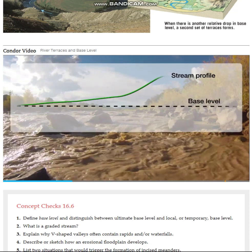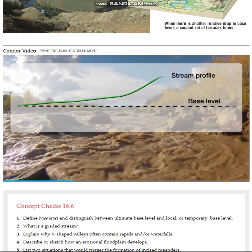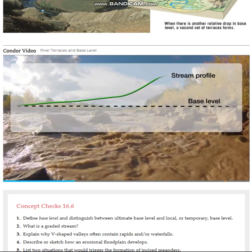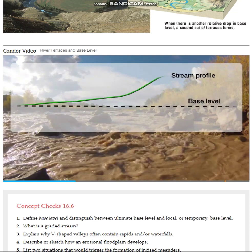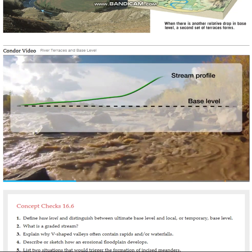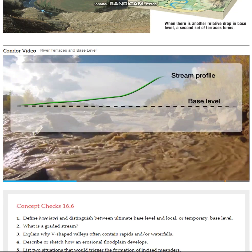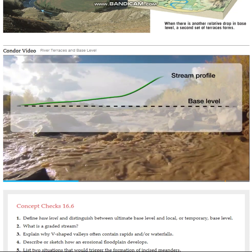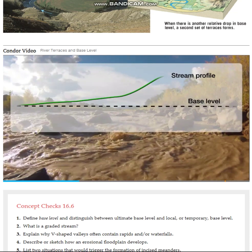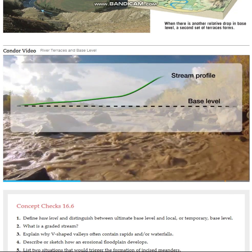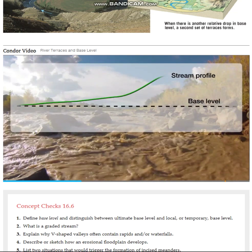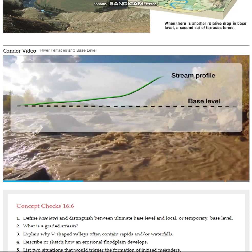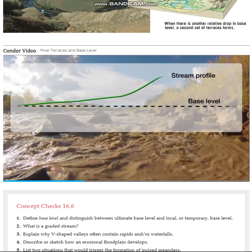The base level is the lowest level to which a river can erode. The mouth of a stream, where it enters the sea, a lake, or a trunk stream, will usually be at the base level. If this imaginary plane drops to a lower elevation than the mouth of the stream, then the stream will gain energy and erode downward to meet it.